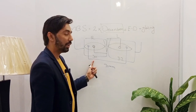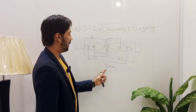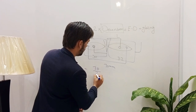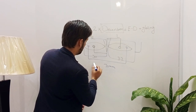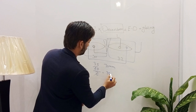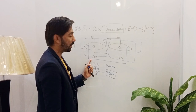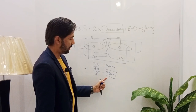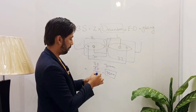Since we have monocular IPD values, we divide the frame PD by 2: 70 ÷ 2 = 35 mm. So the monocular frame PD is 35 mm for each side. Now we can put these values into the decentration formula.